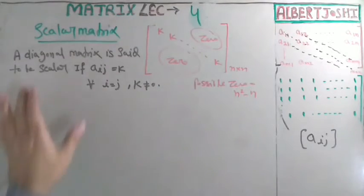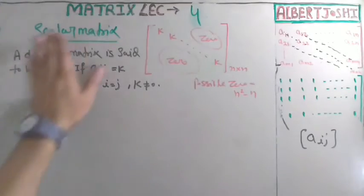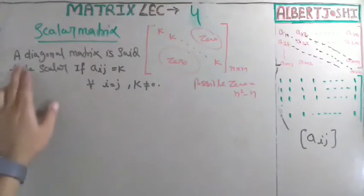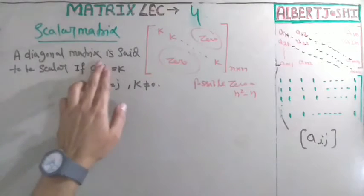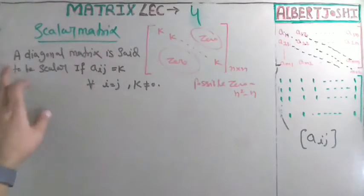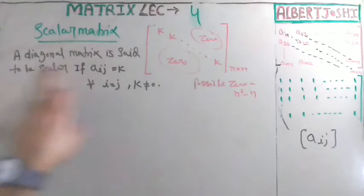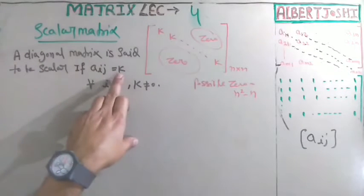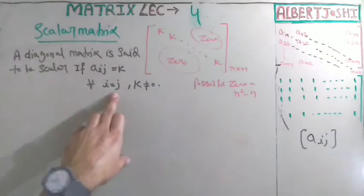This is lecture number 4. Today we will discuss the scalar matrix. What is the definition of a scalar matrix? A diagonal matrix - before coming to this lecture you must review the previous lecture. A diagonal matrix is said to be scalar if aij equals k for all i equals j.